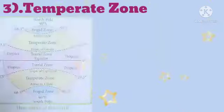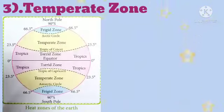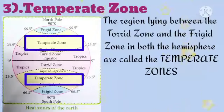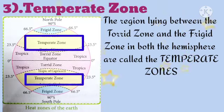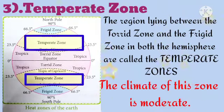Third, the Temperate Zone. The region lying between the Torrid Zone and the Frigid Zone in both hemispheres is called the Temperate Zones. The climate of this region is moderate, meaning neither too hot nor too cold.